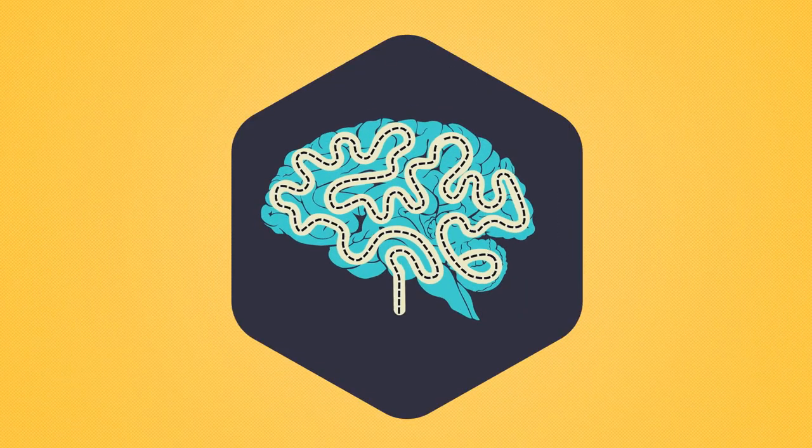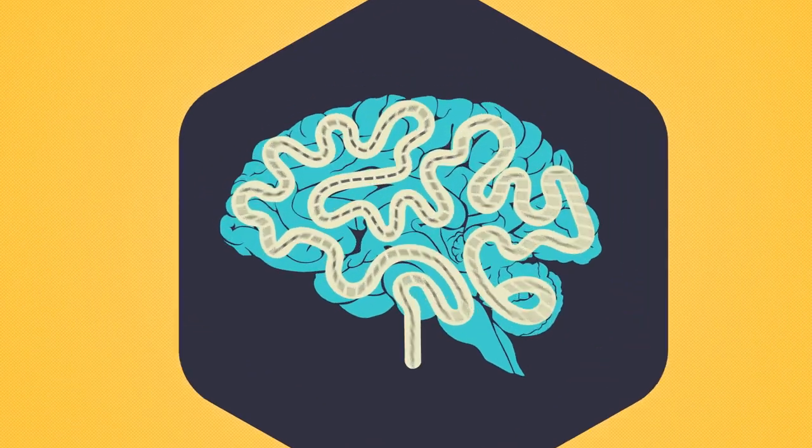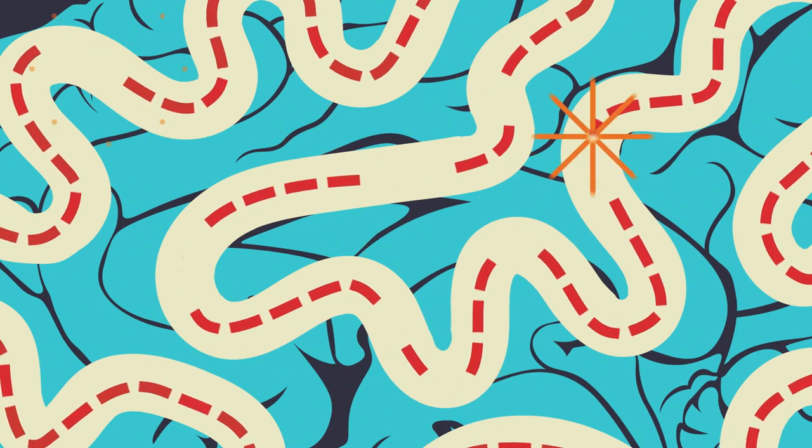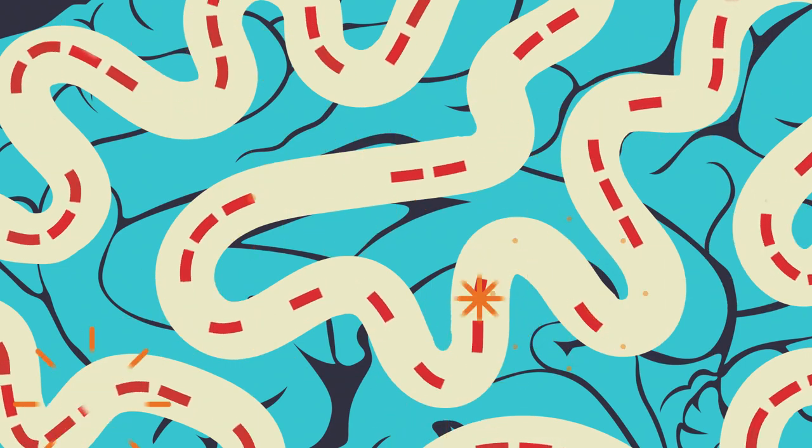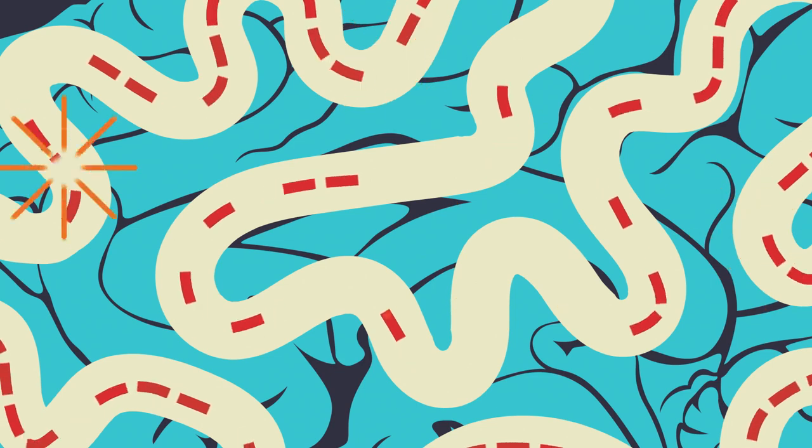Demyelination distorts brain messages. It inhibits the transmission of nerve impulses. This hinders the brain's communication with the body, resulting in disability.